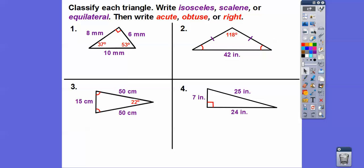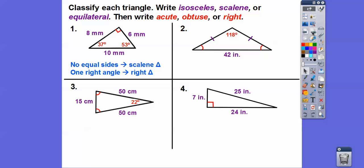Let's classify some triangles by sides and angles. First triangle has sides 8, 6, and 10 — none are equal, so it's scalene. It also has one right angle, so it's a right triangle.